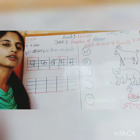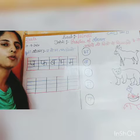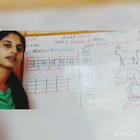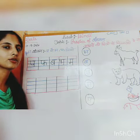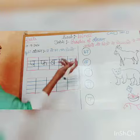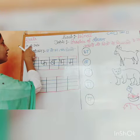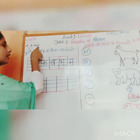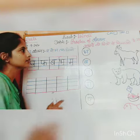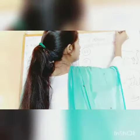Now all of you take out your Abhyas Pustika and open page number 27 and write today's date on page number 27, that is 10-9-20. After this, you will pick CW.